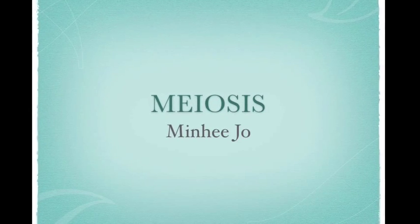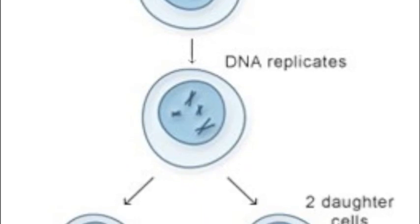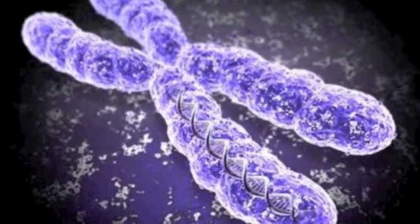Meiosis is a type of reduction cell division that happens twice and produces four daughter cells from one parent cell with only half as many chromosomes as the parent cell.